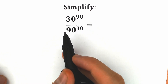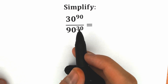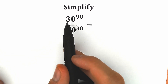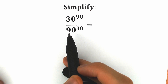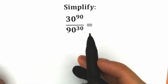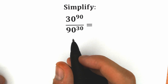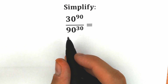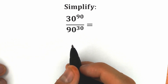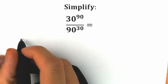We have 30 to the power 90, and we need to divide that by 90 to the power 30. We have a complicated expression, and maybe a lot of students want to raise 30 to the 90th power and 90 to the 30th power and somehow cancel them — but that's a very long way to solve this. In this video we are going to solve this completely step by step, according to great math properties.